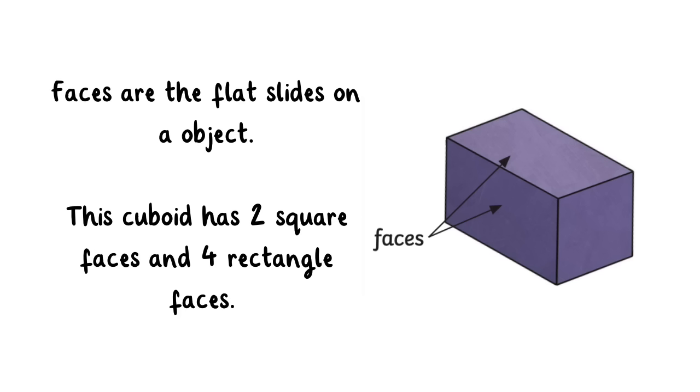Faces are the flat sides on an object. This cuboid has two square faces and four rectangle faces.